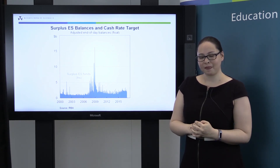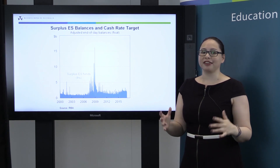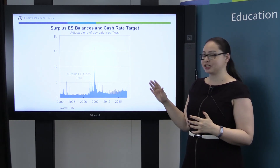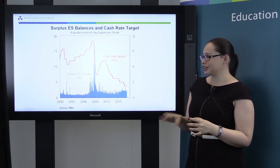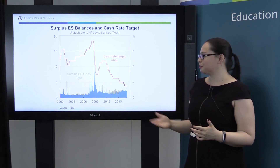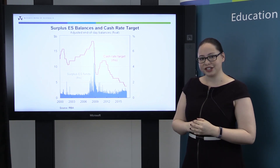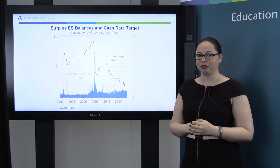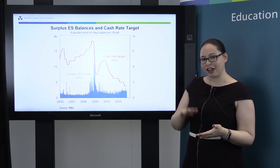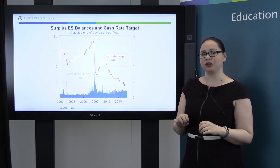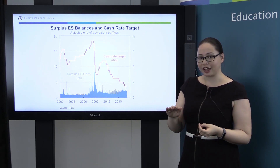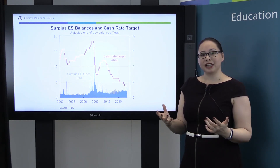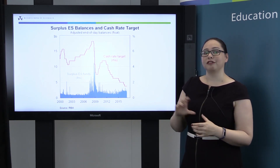This is actually one of my favourite graphs, and the reason for this is that it's really useful in debunking what I think is one of the biggest myths around monetary policy — and that is that the Reserve Bank changes the cash rate target by changing the supply of cash. If I add on the cash rate target here, you can see that there are actually a lot of times when the cash rate target is changing, but the supply of cash is remaining the same. So if we don't change the cash rate target by changing the supply of cash, how do we do it? Well, the corridor system actually does all of the work for us. These surplus ES balances are actually remunerated at the floor of the corridor — that's 25 basis points below the target rate. So regardless of the level of the cash rate target, there's always a 25 basis point penalty for holding that cash at the Reserve Bank. Demand remains unchanged when we change the cash rate target and the market automatically reprices for us.